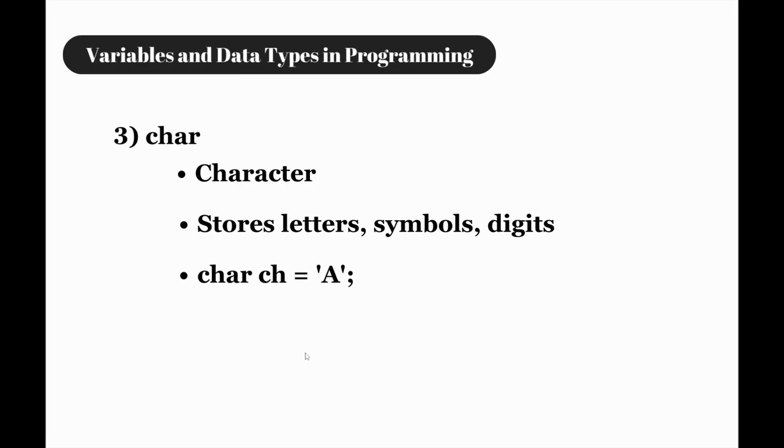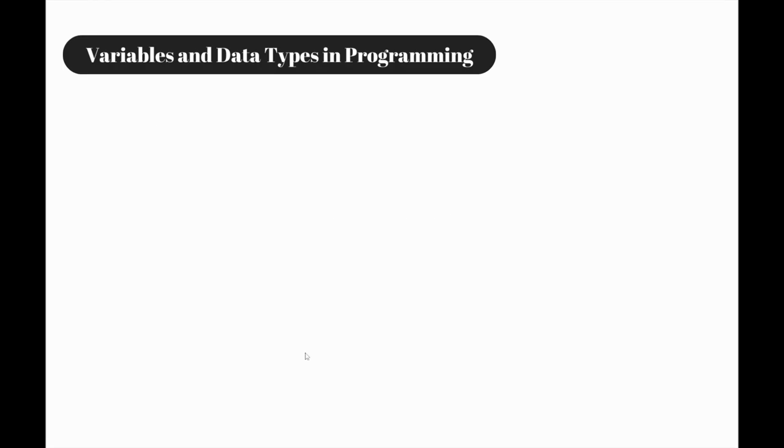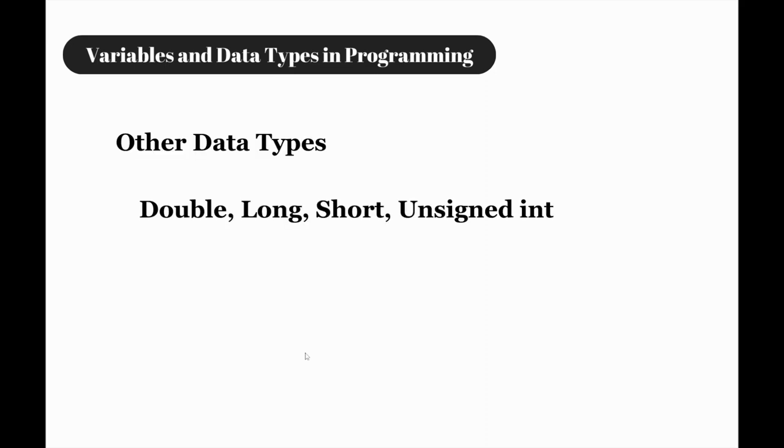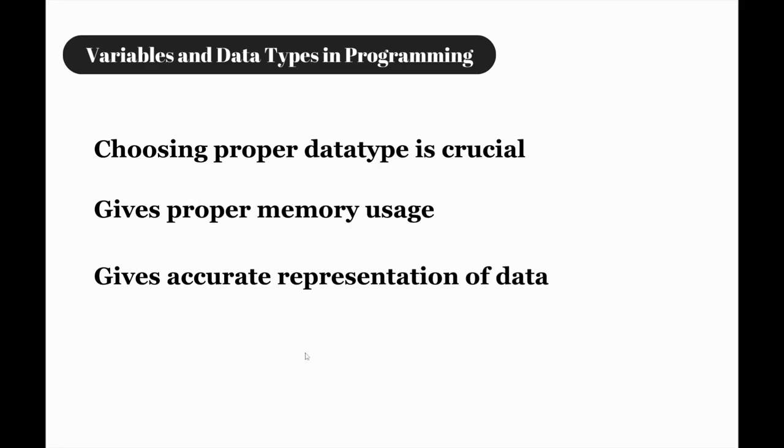Apart from these basic data types, C also provides some other data types like double, long, short, and unsigned int. Choosing appropriate data type is very crucial to ensure proper memory usage and accurate representation of your data in your programs.